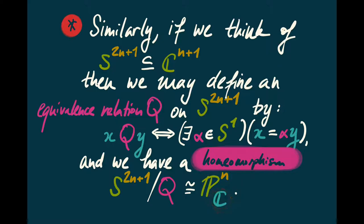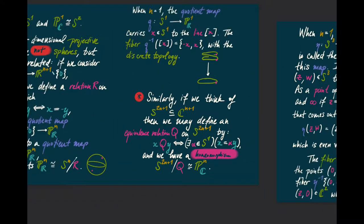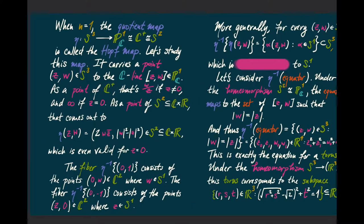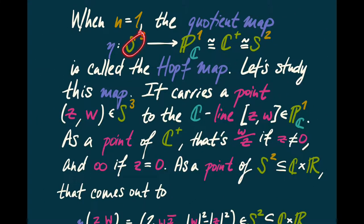When n=1, this says the complex projective line is some quotient of S³. Since P¹_C is homeomorphic to S², we're saying S² is an interesting quotient of S³. The quotient map from S³ to P¹_C — another name for C⁺, which is another name for S² — is called the Hopf map, one of the most important maps in topology.